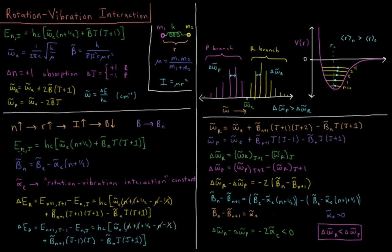So now E of n and j equals hc omega e times n plus 1 half plus b bar n times j times j plus 1. B bar n is equal to b bar e, our equilibrium value of b bar, where our average bond length at the minimum of this potential, minus alpha e times n plus 1 half. So alpha e is called the rotation vibration interaction constant. Alpha e is going to serve to decrease the value of our rotational constant as we go up in vibrational quantum number.